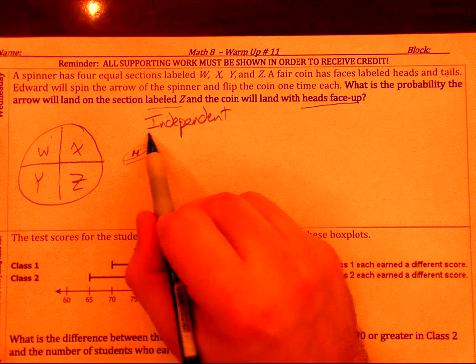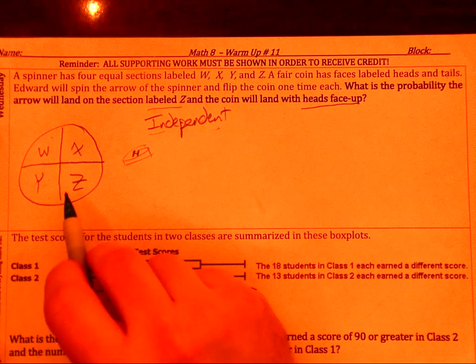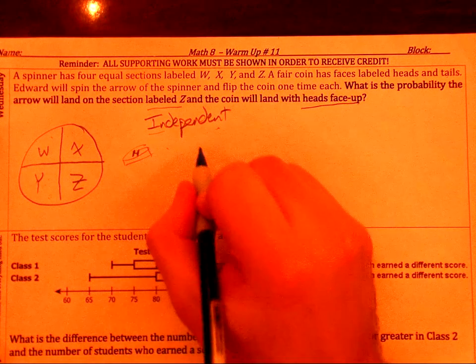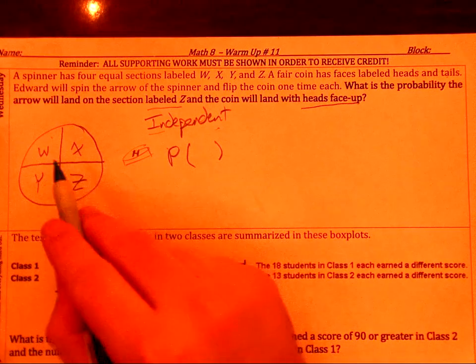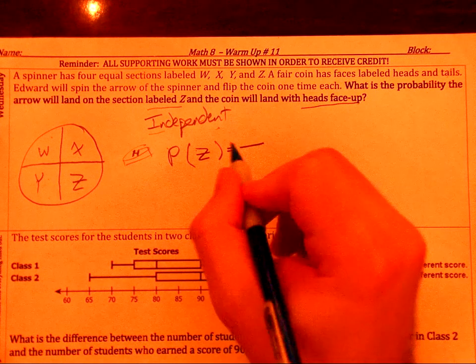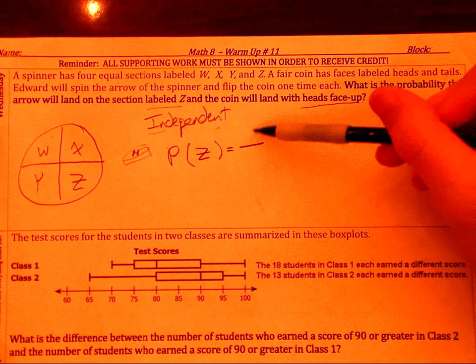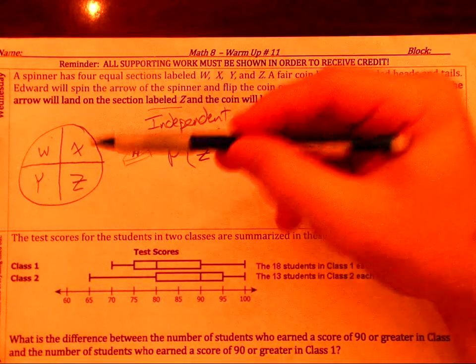Again, this means they are not affecting each other. So let's see. So we're looking for, first, let's do the probability of landing on a section labeled Z. So it's the number of sections that are labeled Z. So we just count up, and so we just have the one. So there's going to be one in our numerator.